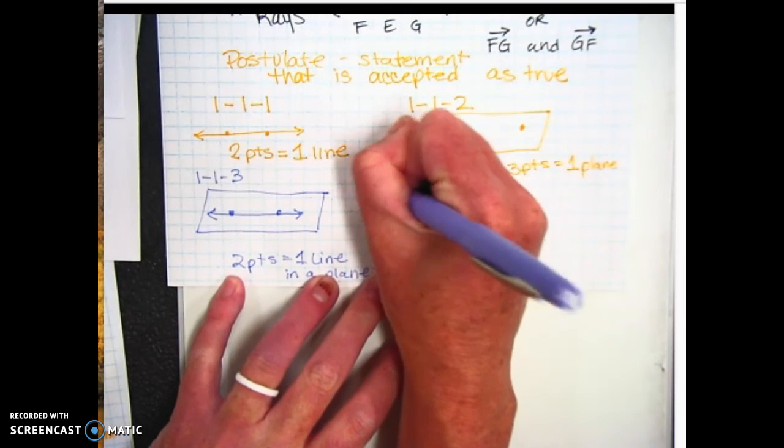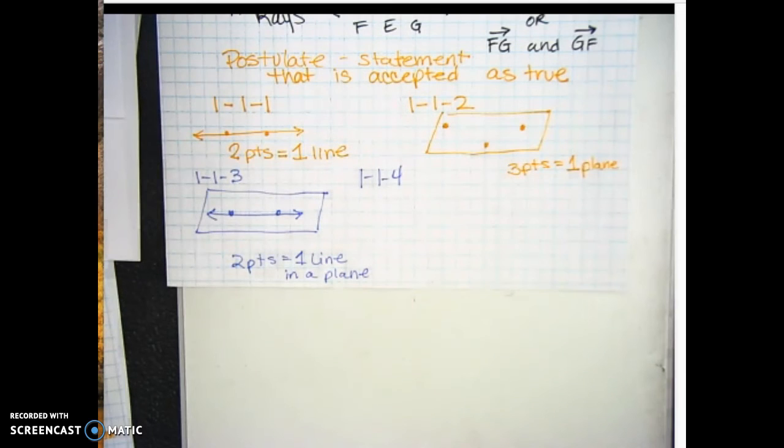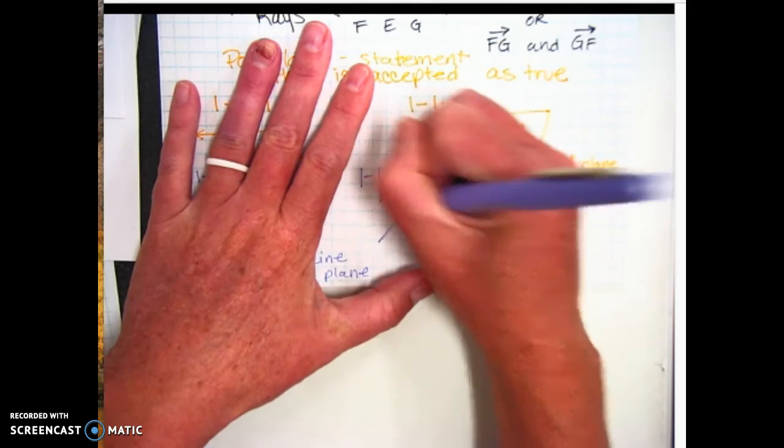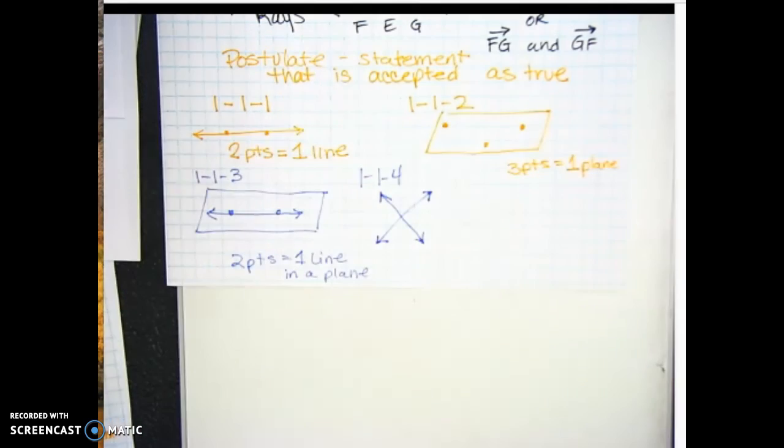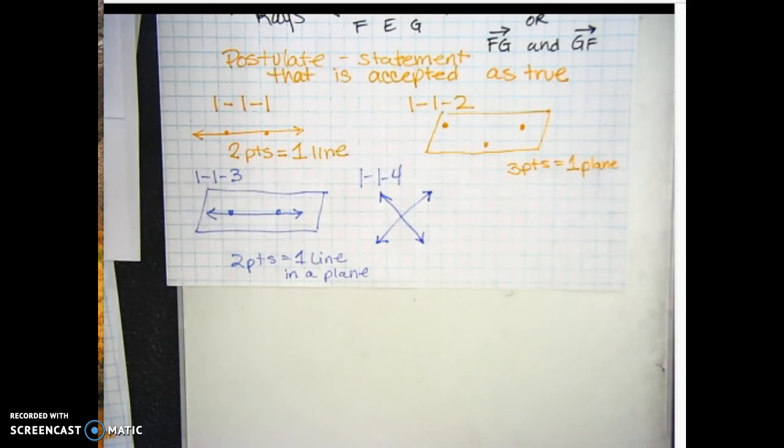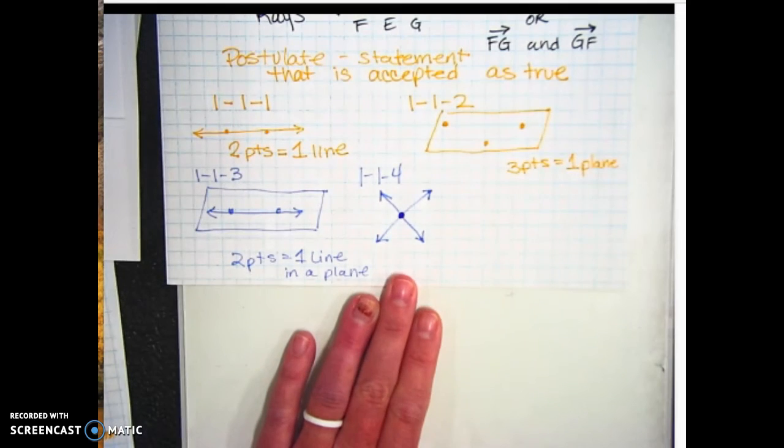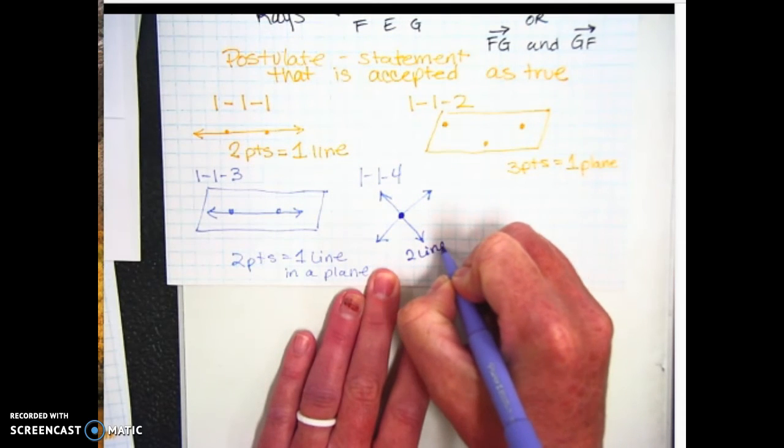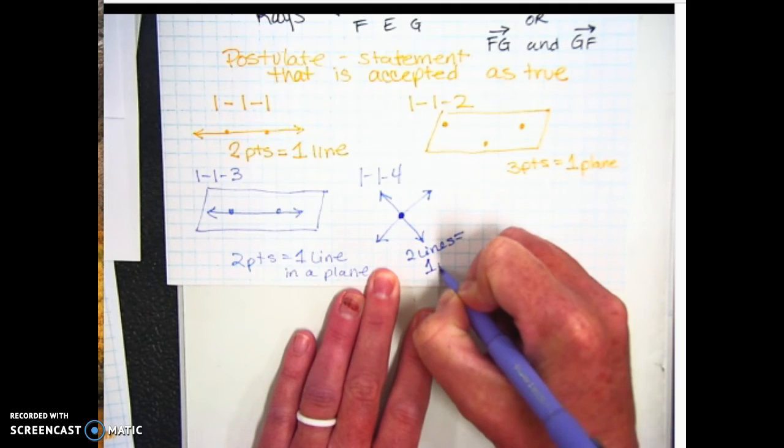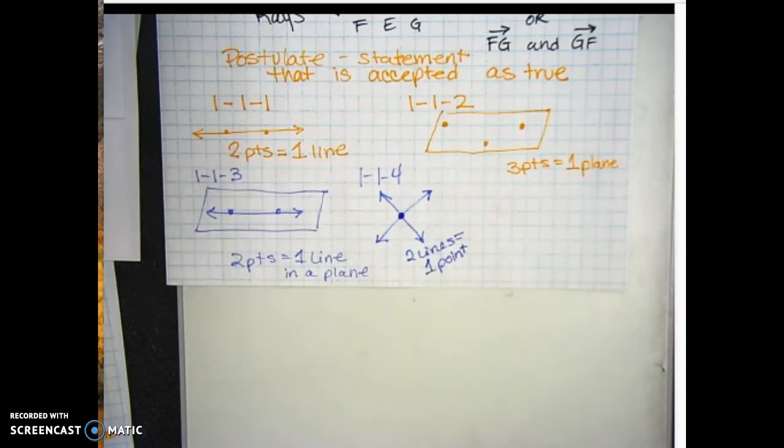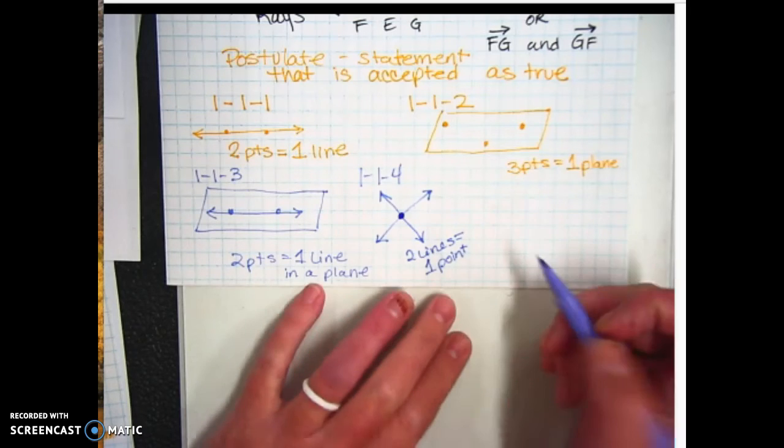We have two more to go. The next one is 1-1-4. So chapter one, section one, the fourth postulate says, if two lines intersect, then they intersect in exactly one point. So we're going to draw two lines. Put arrows on both ends. Those two lines are intersecting. They intersect right here in the middle. So I'm going to make a point right there. I'm going to darken it up. And when you have two lines, that's going to be equal to one point of intersection. That's all that postulate says. You have two lines. They intersect. They intersect at one point. Kind of obvious, kind of easy.